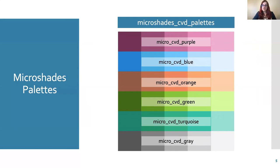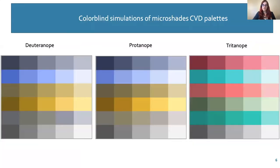This palette includes six base colors with different shading to result in a total of 30 colors. This slide shows the Microshades CVD palettes under each type of CVD simulation. The colors are distinct and therefore universally accessible.